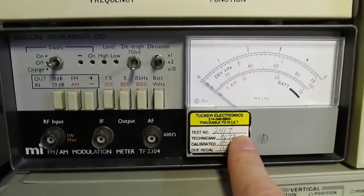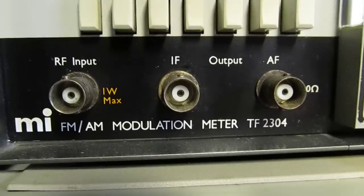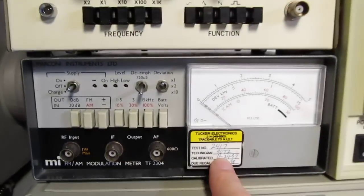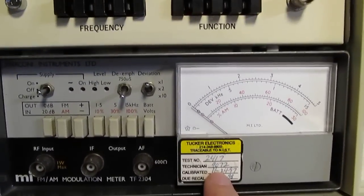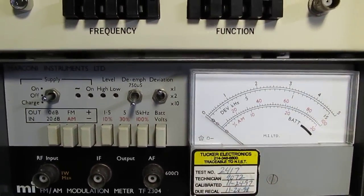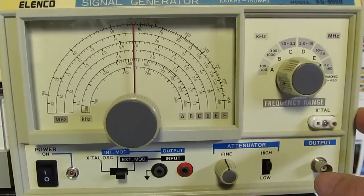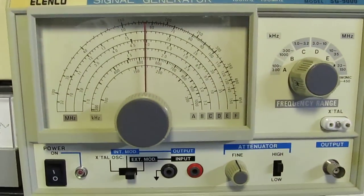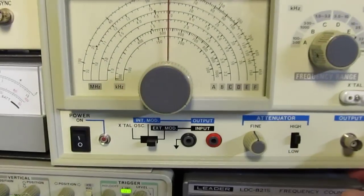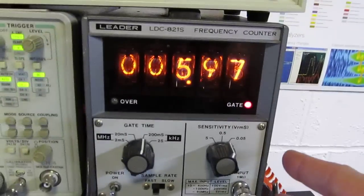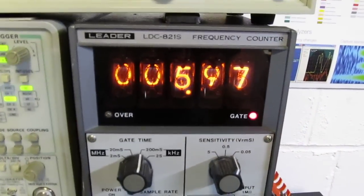Below that here, this is another modulation meter similar to that Heath kit, but this one did AM and FM. It was commercially made by Marconi. A nice little instrument. And then a fairly inexpensive RF signal generator here. You see these all the time on eBay and such like that, but a nice little signal generator.